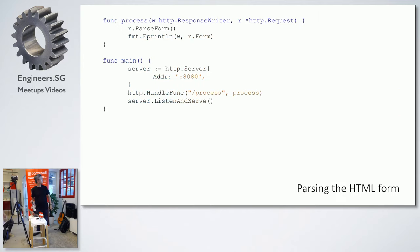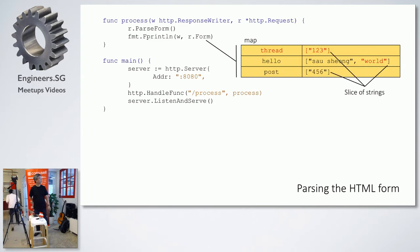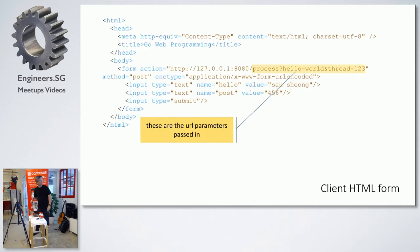Very simply, you use r.Form. First you call ParseForm to parse the form. What you get is a map. That map has entries: a 'thread' field with values one, two, three; a 'hello' field with a slice of two values — SouthShang and world; and a 'post' field with four, five, six. If I go back to the form, I have 'hello' going to 'world' and 'thread' with one, two, three in the URL parameters, and in the form fields I have 'hello' SouthShang and 'post' with four, five, six. When you call ParseForm and then r.Form, it takes everything from the URL and the form fields and gives you a single map.